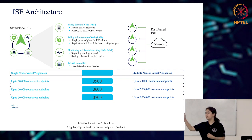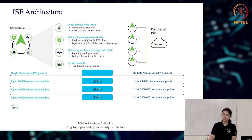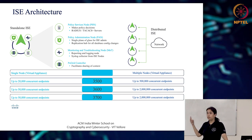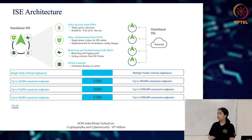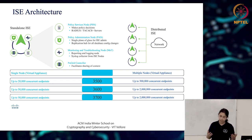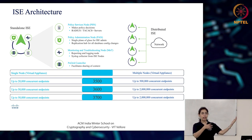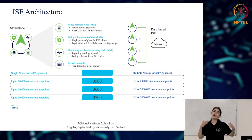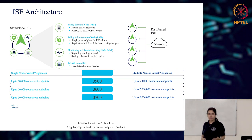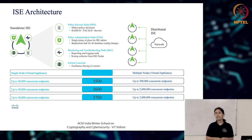The admin node simply tells the PSN the set of rules and syncs everything. The third type is the Monitoring and Troubleshooting Node, or MNT. When we talk about AAA, the third pillar is accounting, and the MNT node plays a very important role in that — it reports and logs everything. It is also a syslog collector for the ISE nodes, logging not only all endpoint interactions but also what is happening across the entire ISE deployment.